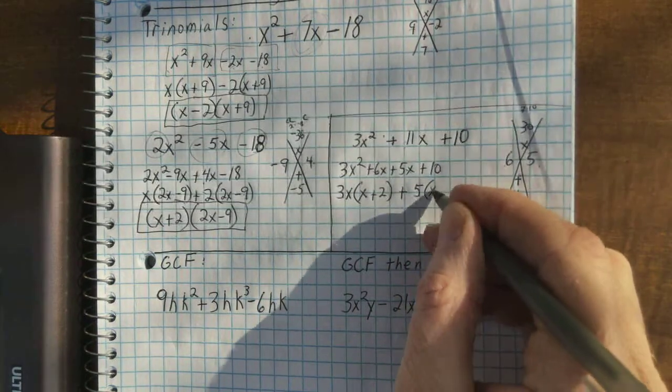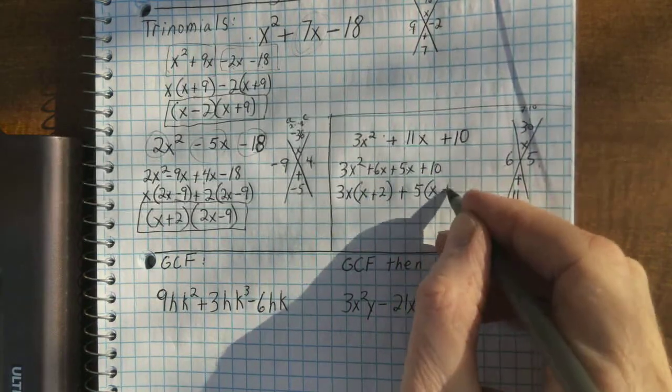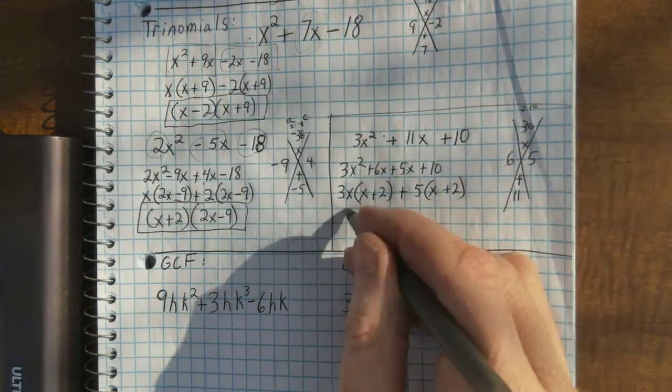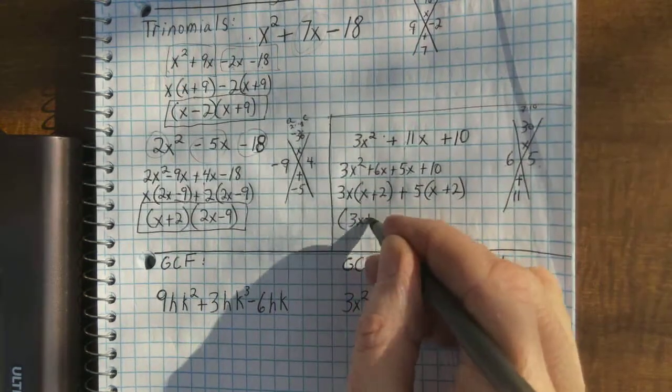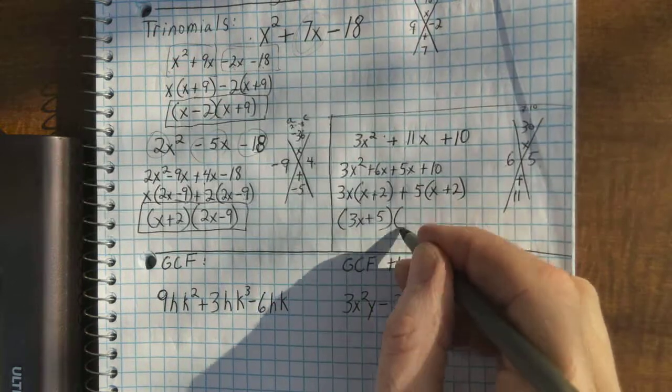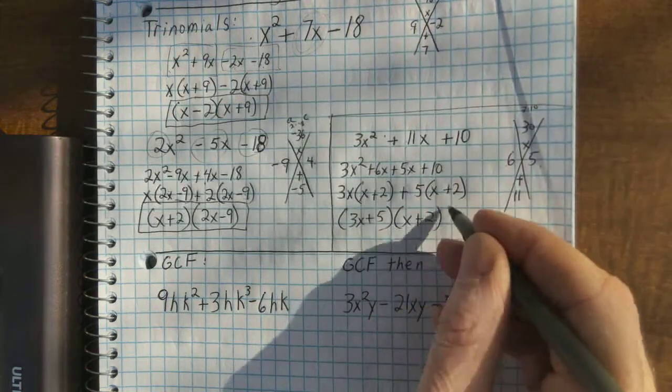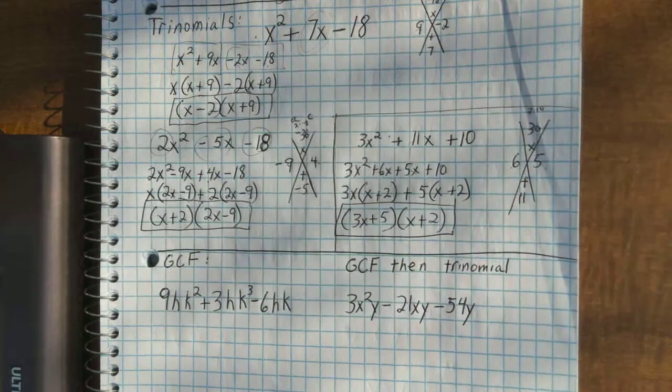Now, what goes into 5x and 10? I've got a 5, I think. And I'll put the x. 5 times x and 5 times 2 will give me 10. Oh, good. Those are the same. So, this factors as 3x plus 5 times x plus 2. Okay. Hopefully, that's a good review for you.